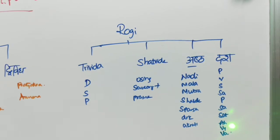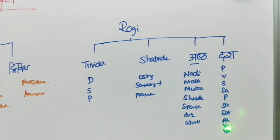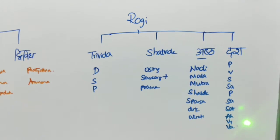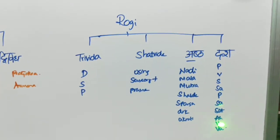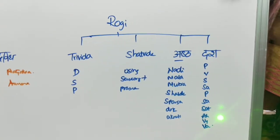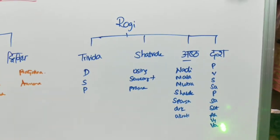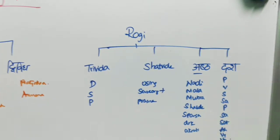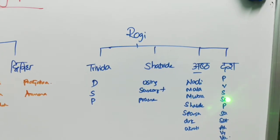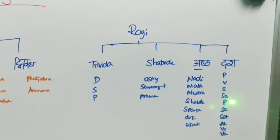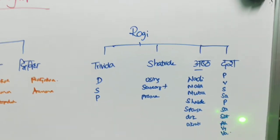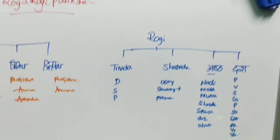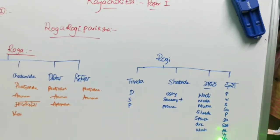Vyayama Shakti examines how a person feels after exercise — at what point they get tired during physical activity. Vyayas refers to the person's age. This completes Dashavida Pariksha: Prakriti, Vikriti, Sara, Satmya, Pramana, Samhanana, Sattva, Ahara Shakti, Vyayama Shakti, and Vyayas.